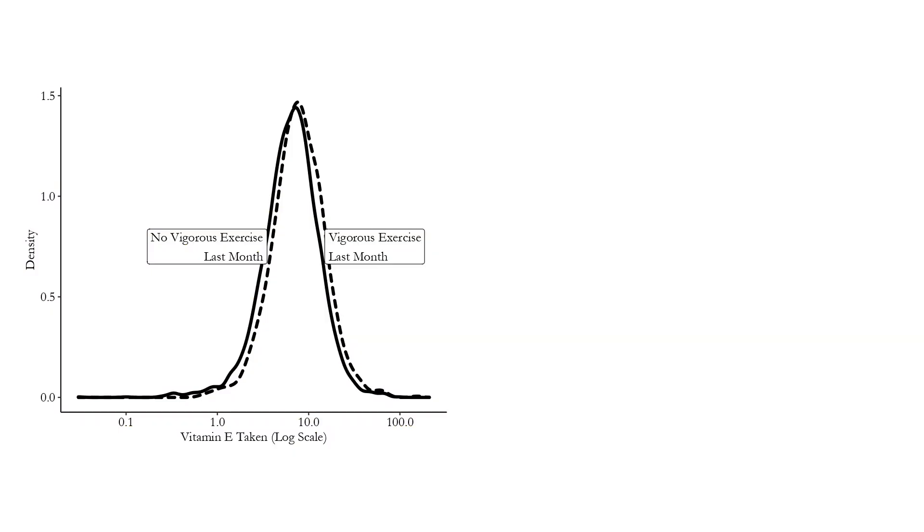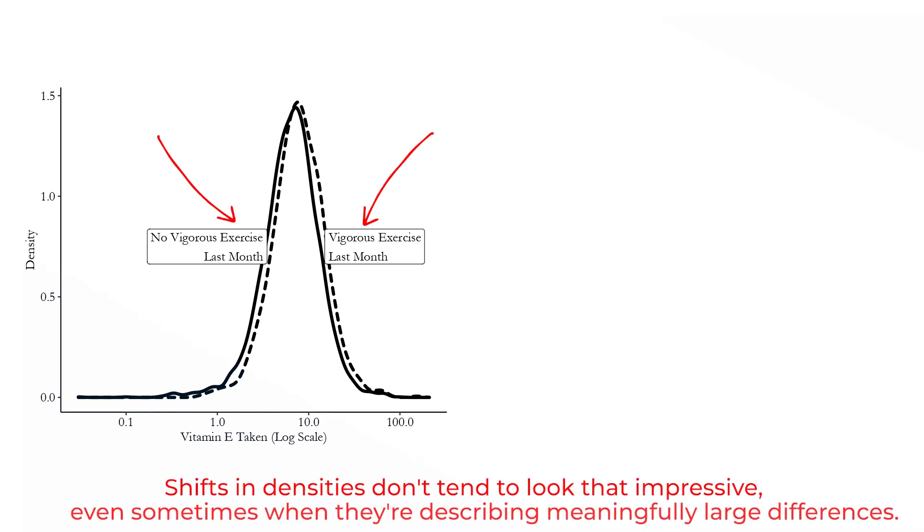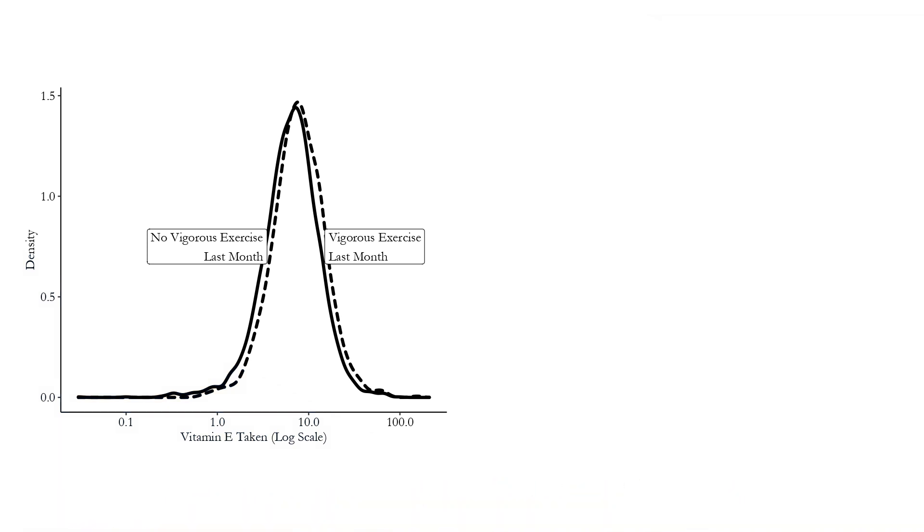I can do the exact same thing for a continuous variable. I can look at how the density distribution changes conditional on different variables. Here I'm going to look at how much vitamin E you took — a continuous variable, not just whether you took it but how much — conditional on whether you exercised vigorously in the last month. We can see that the distribution does change a little bit: the density shifts slightly left or right conditional on whether you exercised vigorously last month. The fact that learning whether you exercised vigorously changes the distribution of your vitamin E taking tells me that one of those things is conditional on the other.